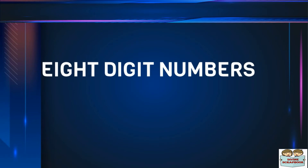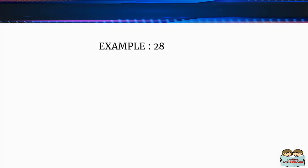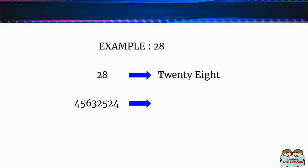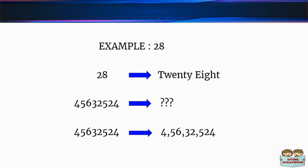When there is a small number, for example 28, we can instantly read it as 28. But when there are many digits in a number, it is confusing to read. So, to make reading and writing larger numbers easier, the digits are broken into periods — that is, the numbers are separated by commas.